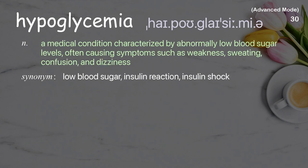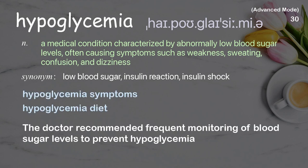Hypoglycemia: a medical condition characterized by abnormally low blood sugar levels, often causing symptoms such as weakness, sweating, confusion, and dizziness. Examples: hypoglycemia symptoms; hypoglycemia diet. The doctor recommended frequent monitoring of blood sugar levels to prevent hypoglycemia.